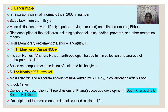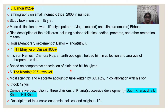The fourth monograph was on the Hill Bhuiya tribe of Odisha, written in 1935. In this book he took anthropometric measurements of this tribe with the help of his son Ramesh Chandra Roy, who was also an anthropologist, helping in the collection and analysis of anthropometric data. This monograph is based on a comparative description of the Plain and Hill Bhuiya, the two divisions of the tribe.